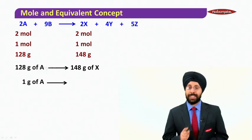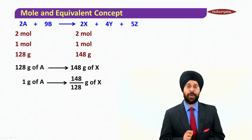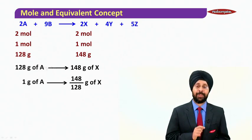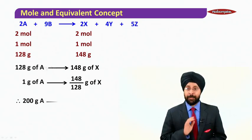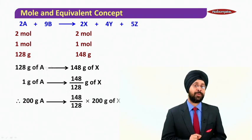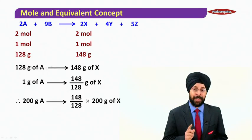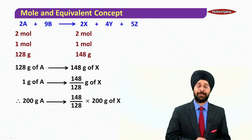And therefore, 1 gram of A is going to produce 148/128 grams of X. Assuming 100% yield, 200 grams of A is going to produce (148/128) × 200 grams of X.